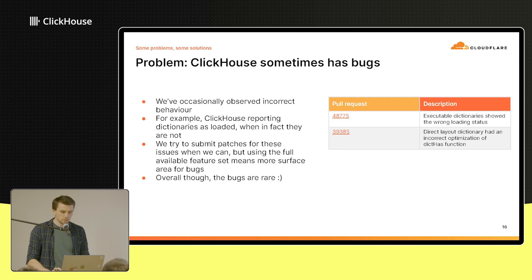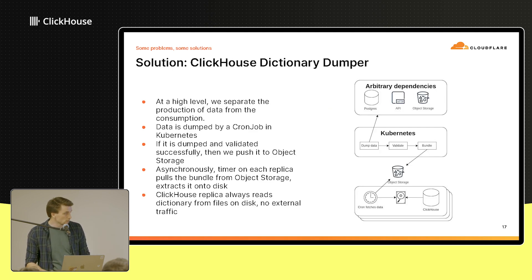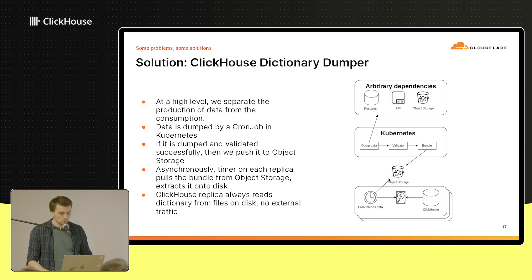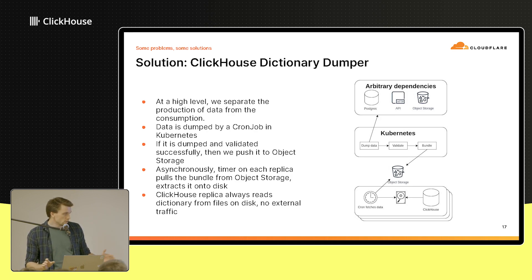I can now talk about how we solved some of these problems. It's a project I've been working on internally called the ClickHouse Dictionary Dumper. The high-level idea is to separate the production of data from the consumption. We produce data in cron jobs on Kubernetes — I call these dumpers. The basic steps are: dump the data, run validation tests in an ephemeral ClickHouse container, and if everything's good, bundle it up and push it into object storage. Asynchronously, on each ClickHouse replica, a timer pulls the dictionary bundle out of object storage and extracts it onto disk.